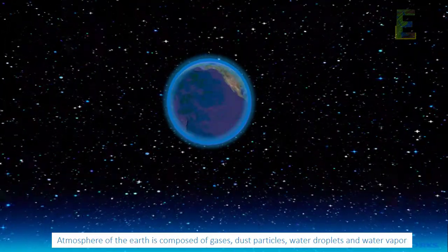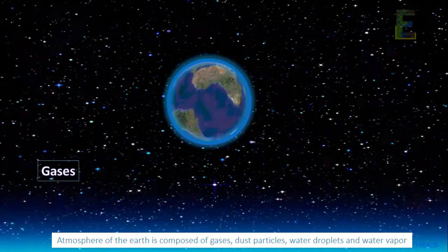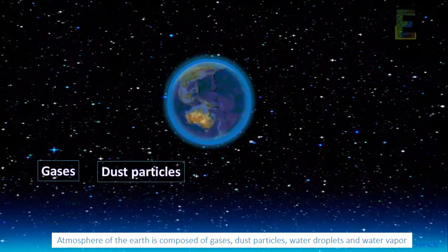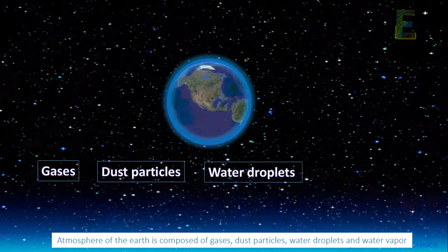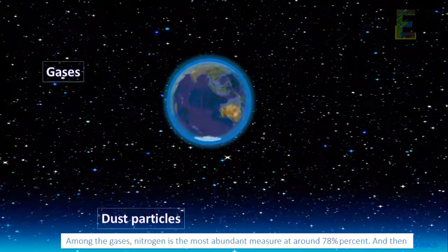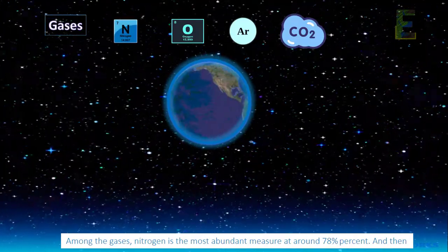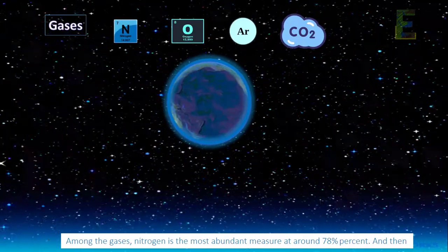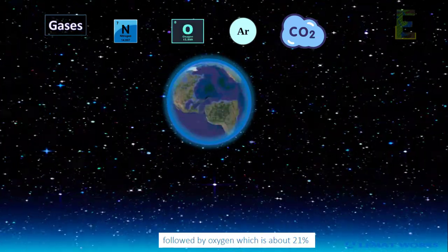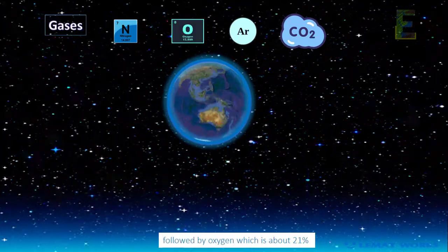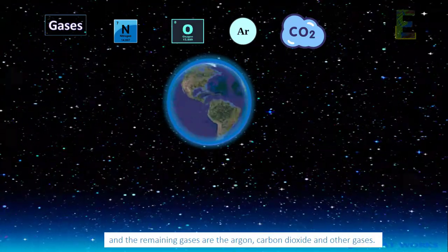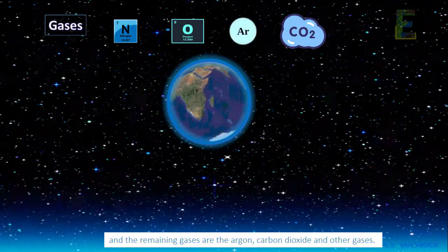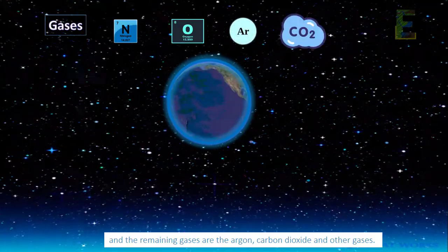Atmosphere of the Earth is composed of gases, dust particles, water droplets, and water vapor. Among the gases, nitrogen is the most abundant measured at around 78% and then followed by oxygen which is about 21%. And the remaining gases are argon, carbon dioxide, and other gases.